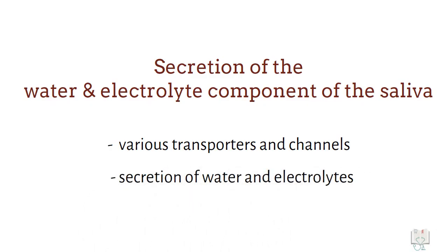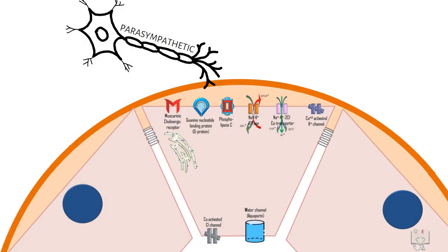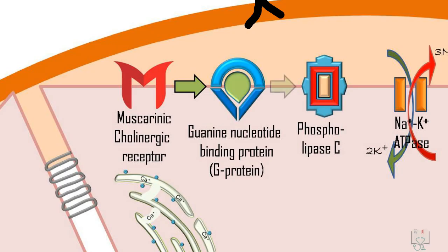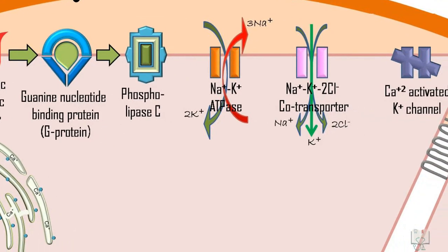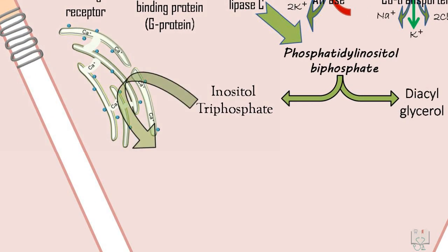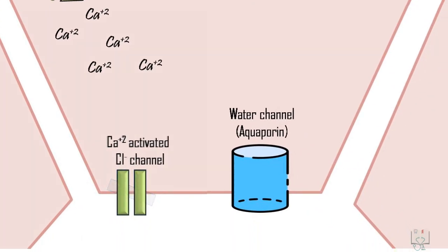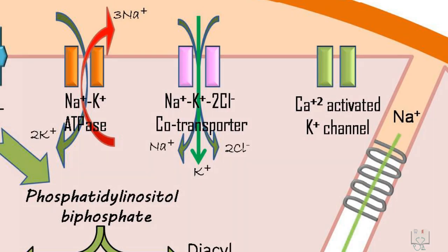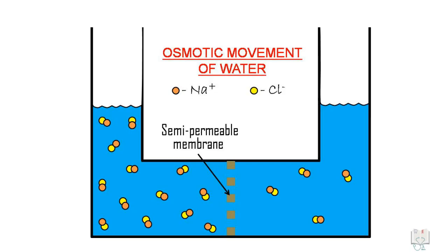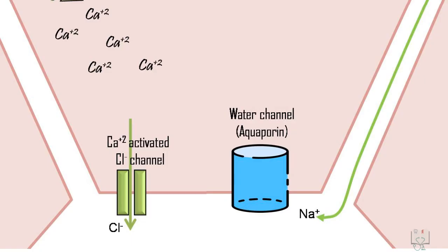Secretion of water and electrolytes is regulated mainly by the parasympathetic innervation. Acetylcholine released from the nerves binds to the muscarinic cholinergic receptor, which activates G protein. Activated G protein in turn activates phospholipase C, which converts phosphatidylinositol bisphosphate into diacylglycerol and inositol triphosphate (IP3). IP3 subsequently causes release of calcium from intracellular stores into the cytoplasm. Rise in cytoplasmic calcium opens chloride channels and potassium channels. The open chloride channel transports chloride ions into the acinar lumen, causing sodium ions from the interstitium to cross the tight junction into the lumen to balance the electrochemical gradient. The resulting osmotic gradient drives movement of water into the lumen mainly through aquaporins.